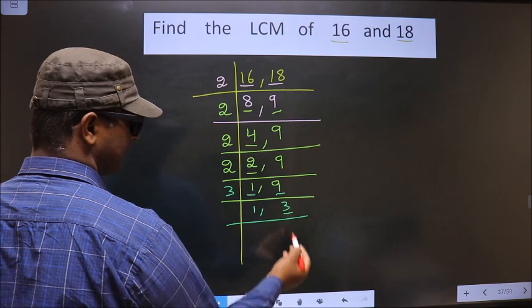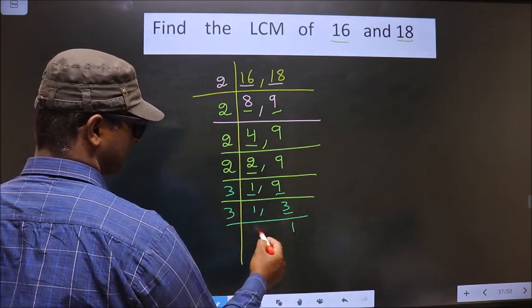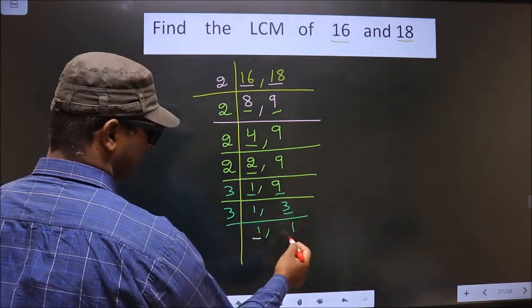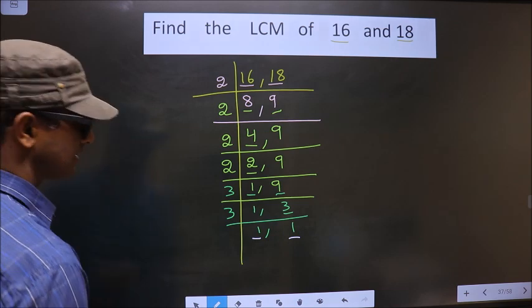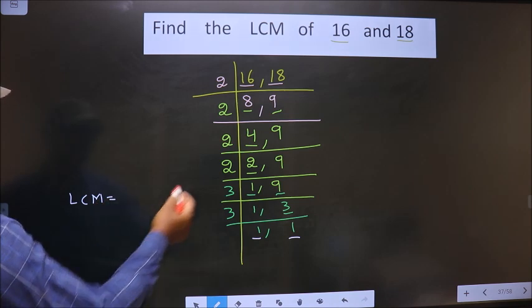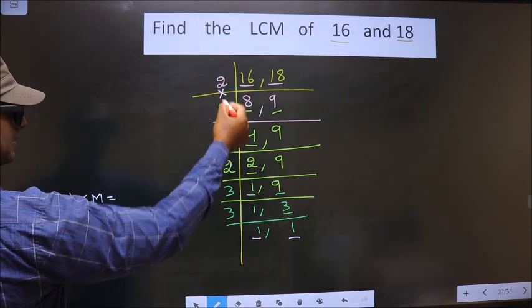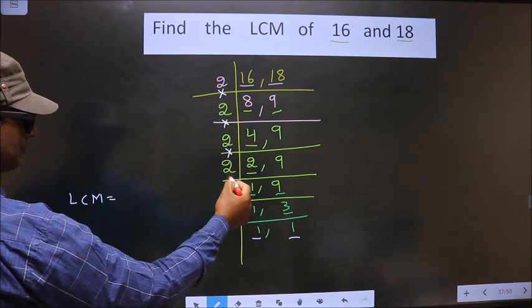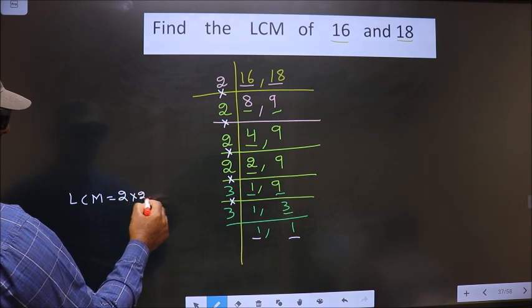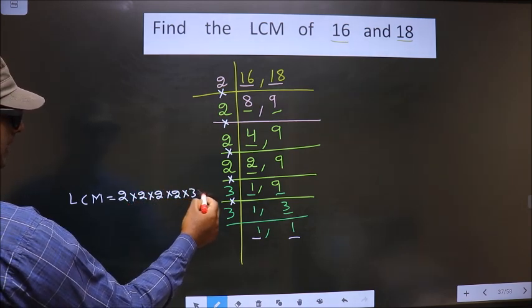Now here we got 1 in both the places. So now our LCM is the product of these numbers: 2 into 2 into 2 into 2 into 2 into 3 into 3.